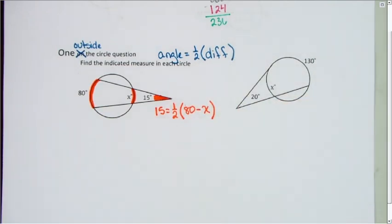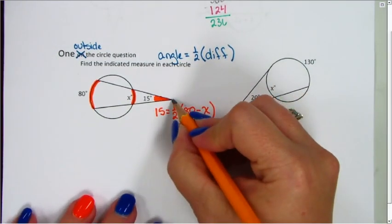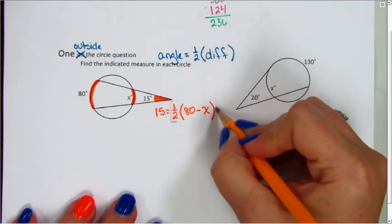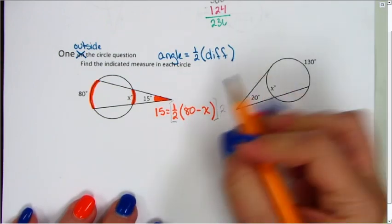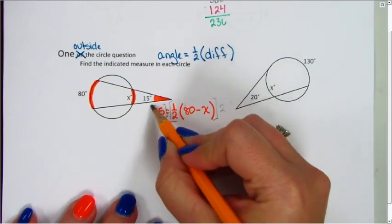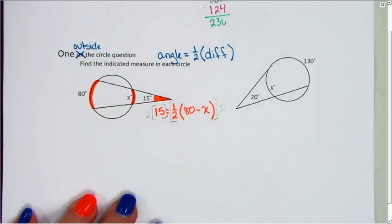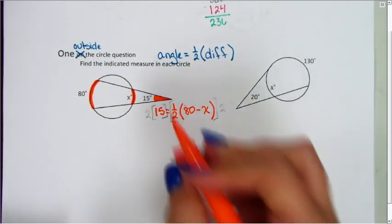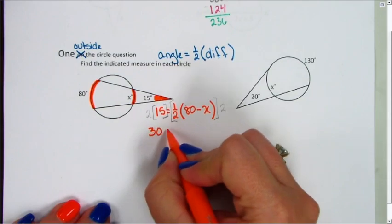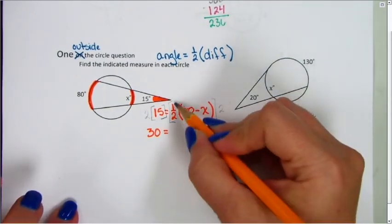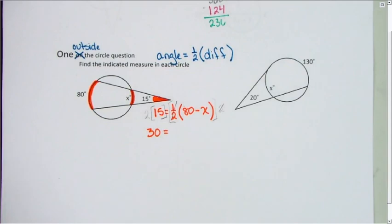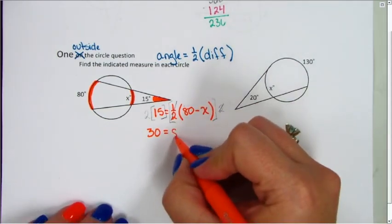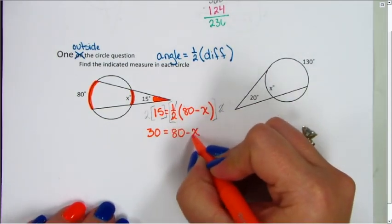The first thing I like to do is get rid of that fraction by multiplying by its reciprocal. So instead of one half, I'm going to multiply by 2. That's going to give me 30 equals 80 minus x.